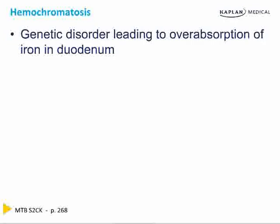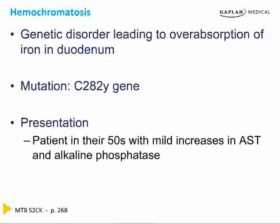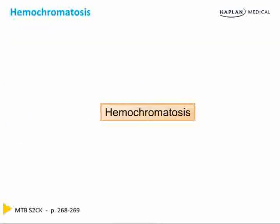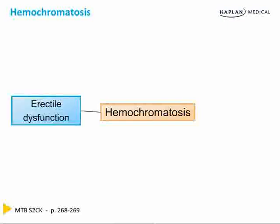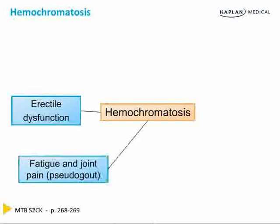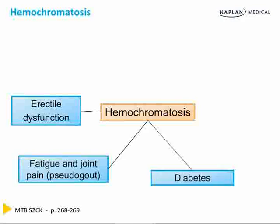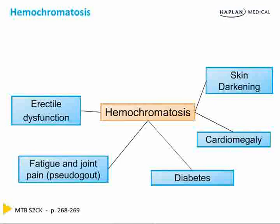Hemochromatosis is a genetic disease leading to over-absorption of iron in the duodenum — a mutation in the C282Y gene. Patients present in their 50s with mild increases in AST and alkaline phosphatase. Clinical manifestations include erectile dysfunction, fatigue, joint pain from pseudogout, diabetes from iron deposition in the pancreas, cardiomegaly, skin darkening, and amenorrhea in females.